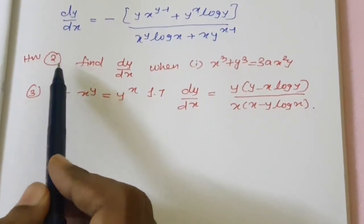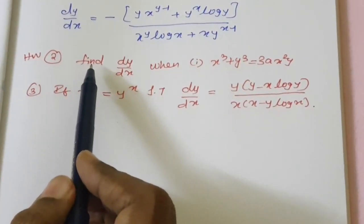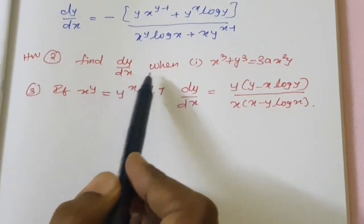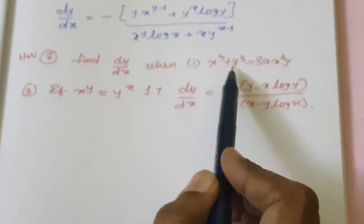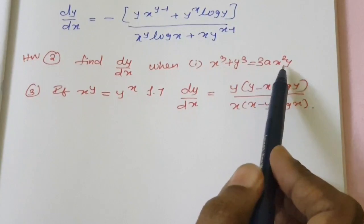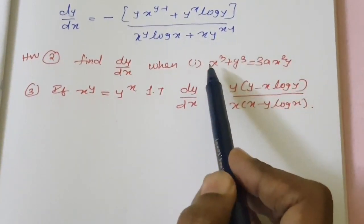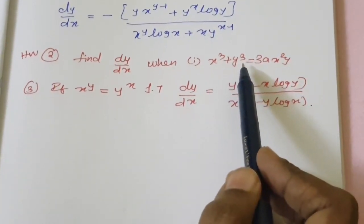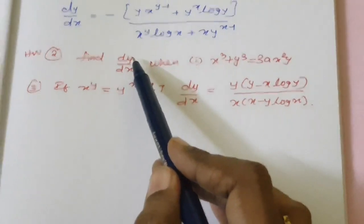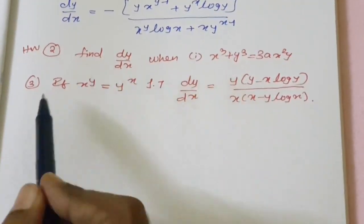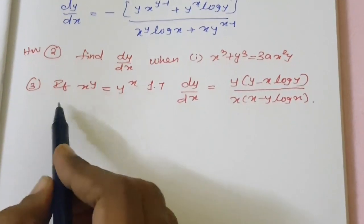Similarly, do the second problem as homework. Here they ask to find out the value of dy by dx when x cube plus y cube equal to 3ax squared y. From this equation, you have to find out the value of dy by dx. We now move on to the third problem.